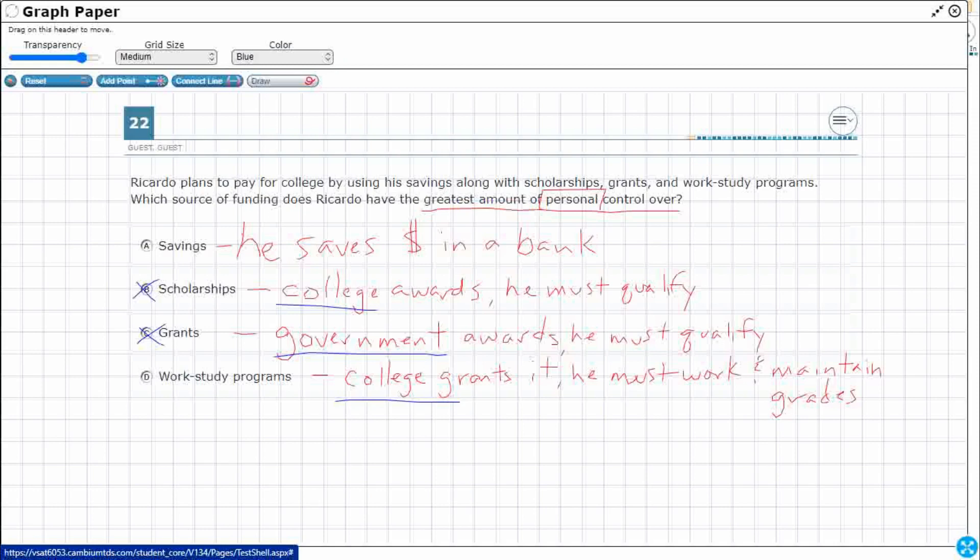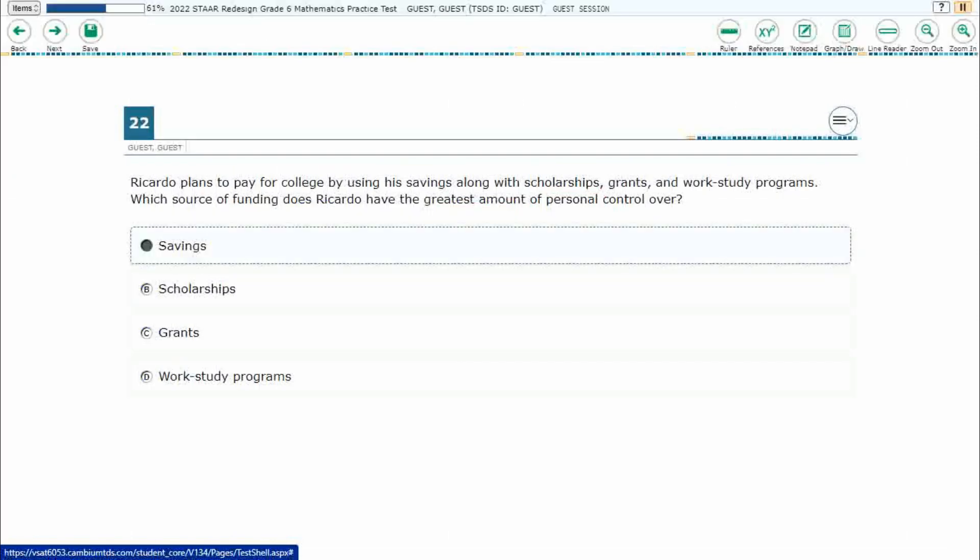So college decides, college decides, government decides. You know what? I'm liking this savings right here because he gets to save, which means he, Ricardo, gets to choose how much money he spends on other things, how much money he saves. So our answer here is A.